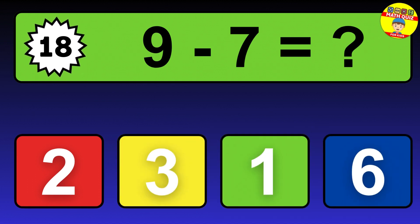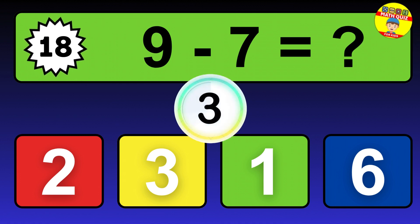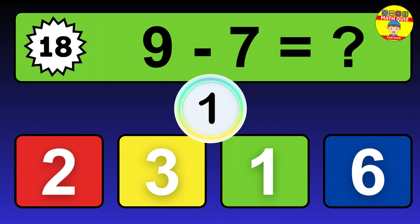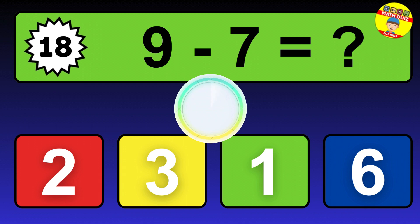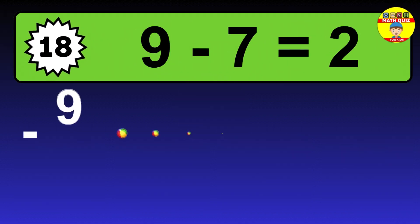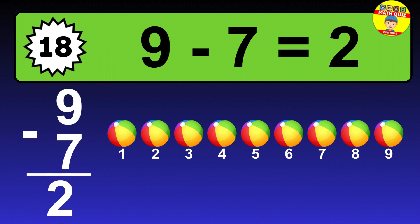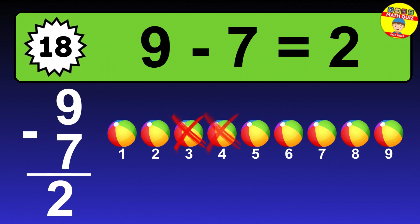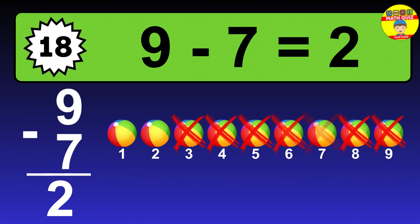Question 18. 9 minus 7 equals what? The answer is 9 minus 7 is 2. Let's count it: 1, 2.